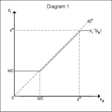Because Firm 2 has the same marginal cost as Firm 1, its reaction function is symmetrical with respect to the 45-degree line. Diagram 2 shows both reaction functions.